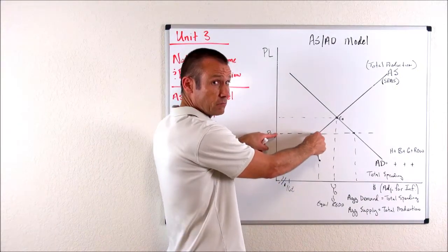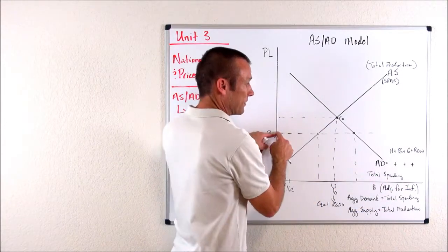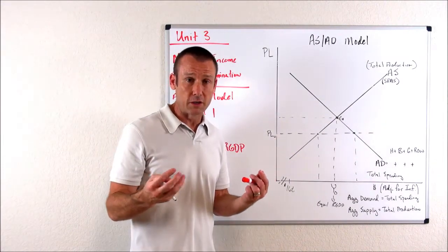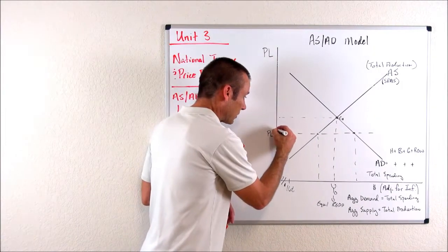If this was our total production, measured in dollars, which have been adjusted for inflation, and this was our total spending, well, if we're spending more than our total production, what would happen? Well, inventories would go down, and the price level would start to go up.